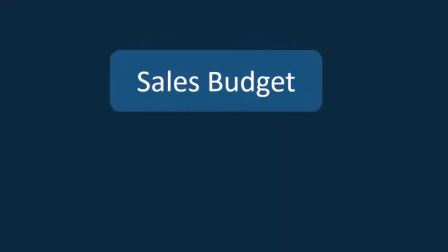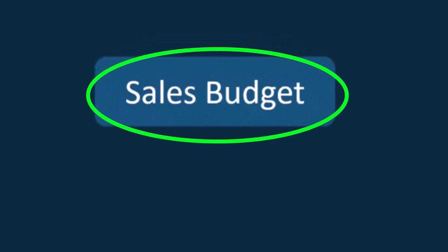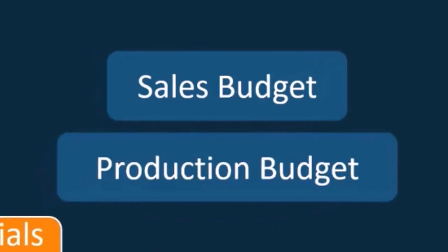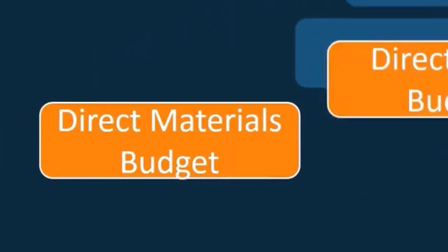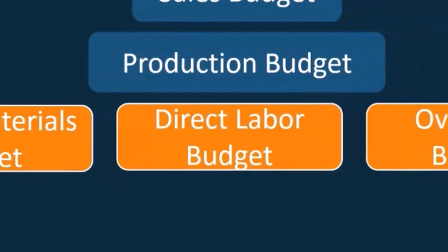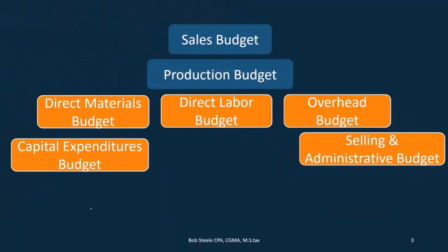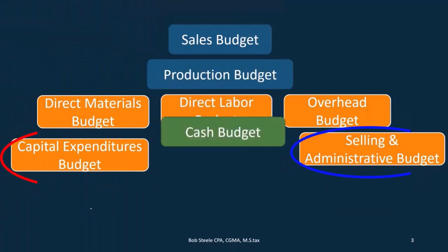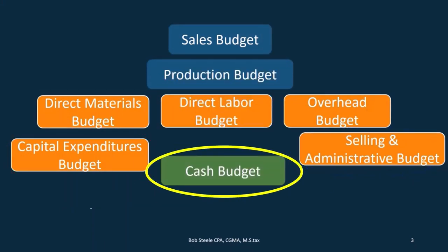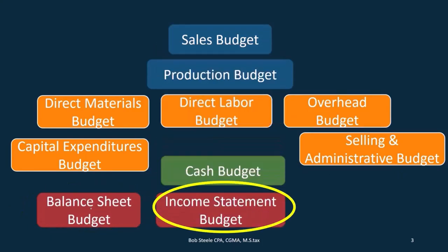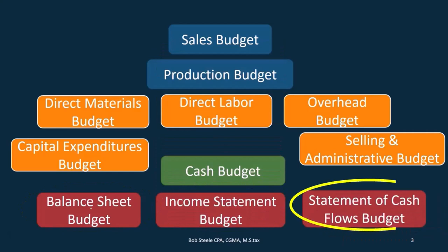These are the components, and we need to do them in this order. We start with the sales budget, then the production budget. The production budget is used to make the direct materials budget, the direct labor budget, the overhead budget, as well as the capital expenditures budget, and the selling and administrative budget. Then we have the cash budget, and then we can put together the balance sheet budget, the budgeted income statement, as well as the cash flow.